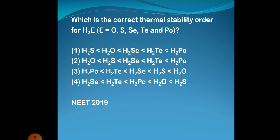The question asks: which is the correct thermal stability order for H₂E, where E is the hydride element — oxygen, sulfur, selenium, tellurium, and polonium. This is basically the group 16 elements, and we need to find the thermal stability order of the dihydrides of group 16 elements.